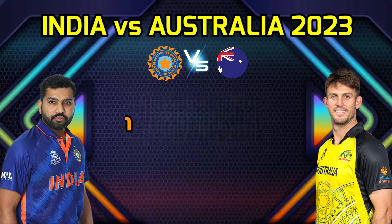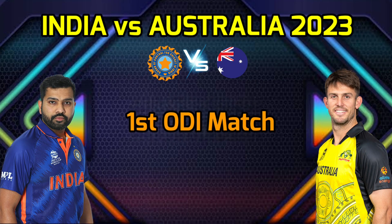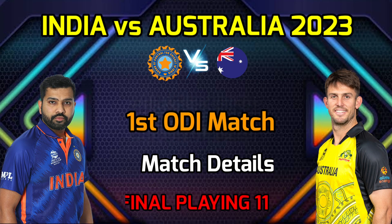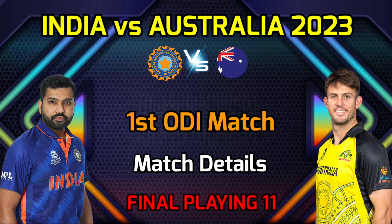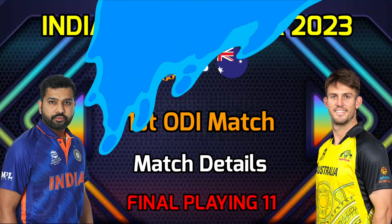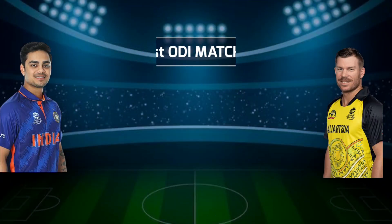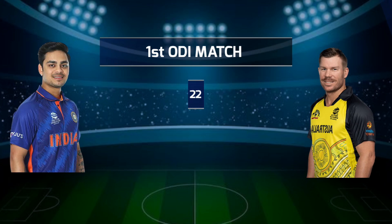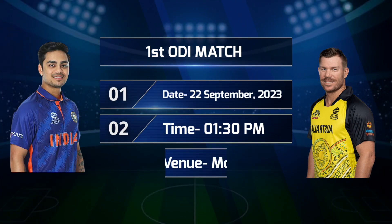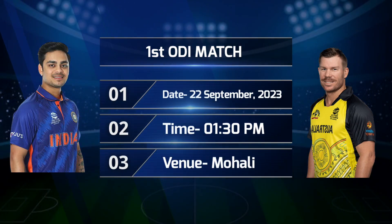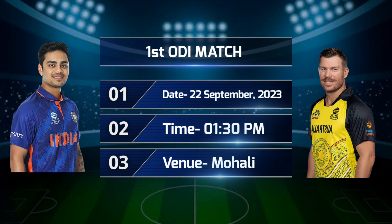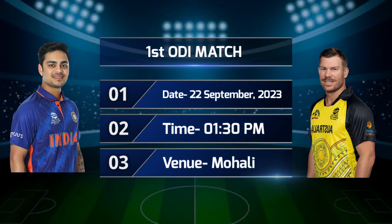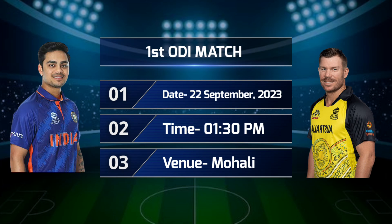India vs Australia First ODI match 2023. Match details and final playing 11. Date: 22nd September 2023. Timing: 1:30 PM Indian Standard Time. Venue: Punjab Cricket Association Stadium, Mohali.